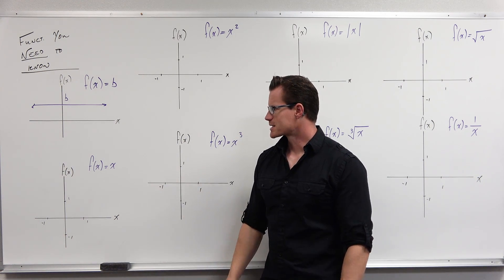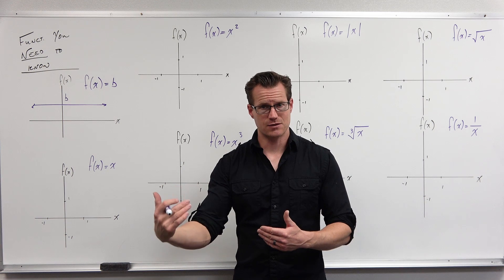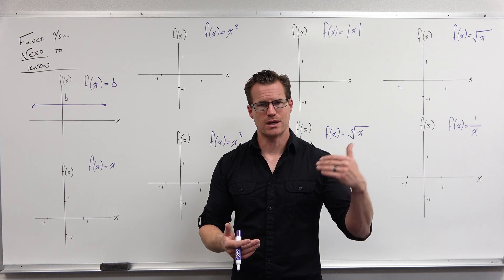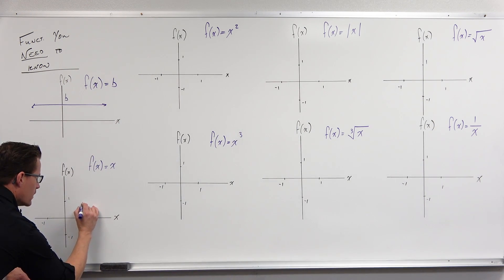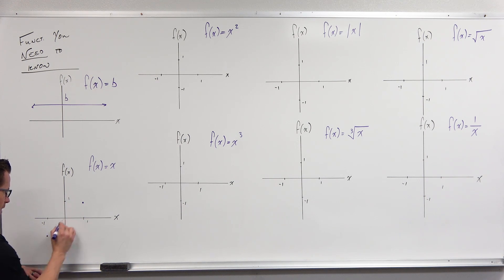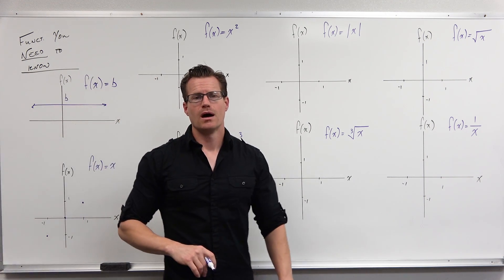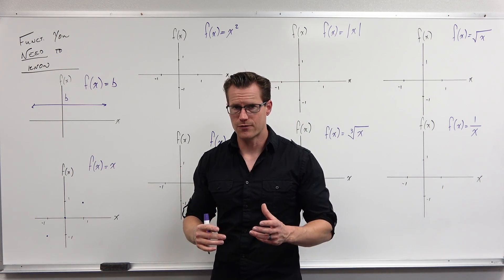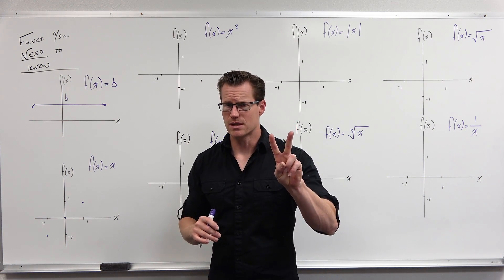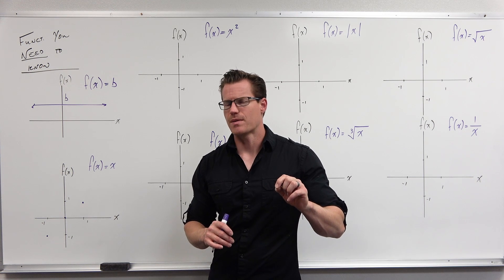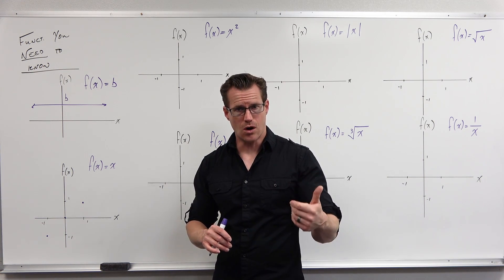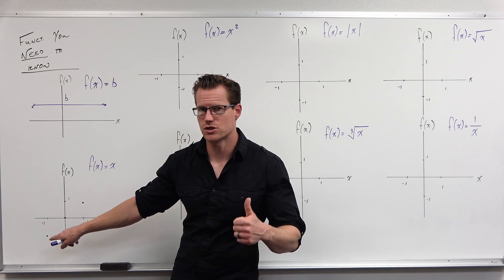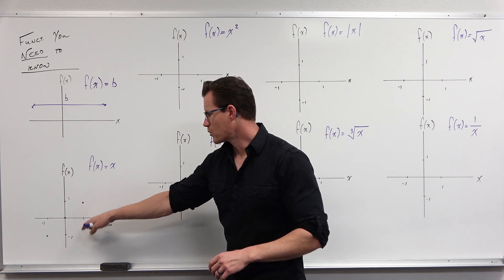Let's talk about f(x) = x. This says that if I plug in an x value, I get that x value as an output — the input and output are both the same. Plug in 1, I get 1. Plug in 2, I get 2. Plug in negative 1, I get negative 1. Plug in 0, I get 0. Now, every single odd function in your library of functions is going to have two key points that are always the same: (1, 1) and (-1, -1). Every odd function has that, and most of them also have (0, 0).